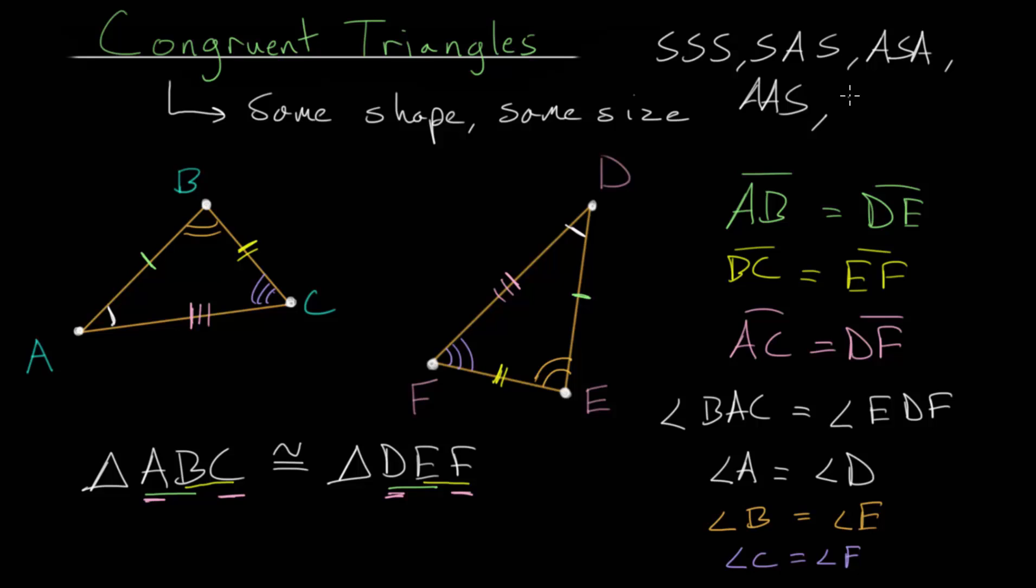And lastly, we have what is called the hypotenuse leg theorem or criteria that can determine if they're congruent, and this deals with right triangles. If you know the hypotenuse and you know one of the legs and you know one of the angles is a right angle, then the two triangles are congruent to each other.